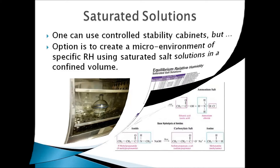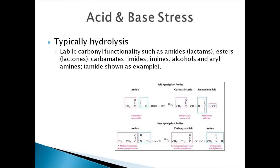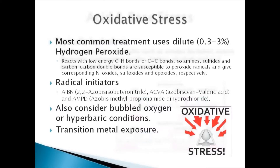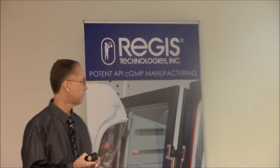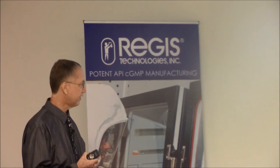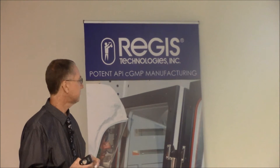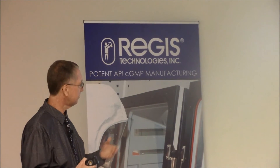Acid and base stress typically deal with hydrolysis mechanisms, with various labile bonds described accordingly. For oxidative stress, hydrogen peroxide or other forms of oxidation can facilitate changes in your material. We typically work with hydrogen peroxide. I've also been interested in trying hyperbaric oxygen or bubbling oxygen through samples, as that seems more relevant to real-world conditions, but peroxide is what the industry uses at the moment.